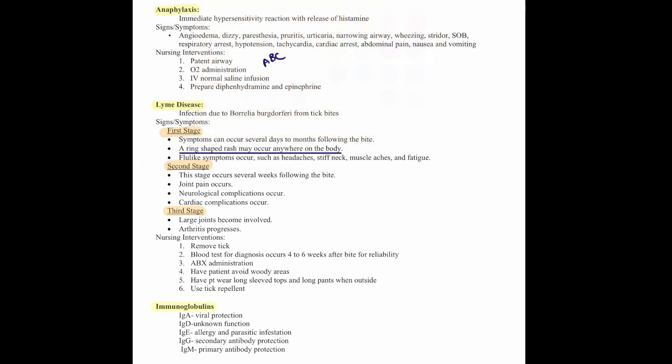There are different types of immunoglobulins. Immunoglobulin A provides viral protection. Immunoglobulin D has an unknown function. Immunoglobulin E provides allergy and parasitic infestation protection. IgG is our secondary antibody protection, and IgM is our primary antibody protection.